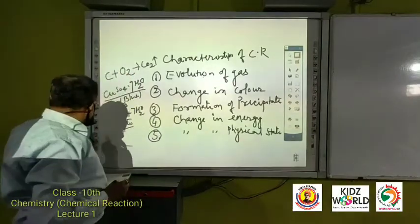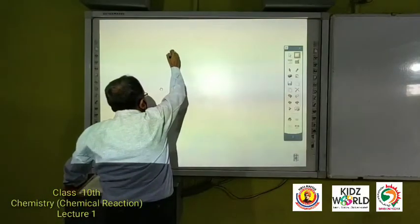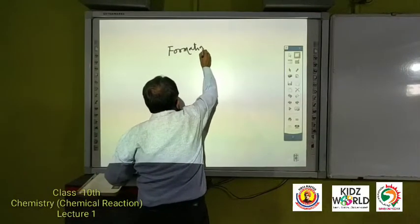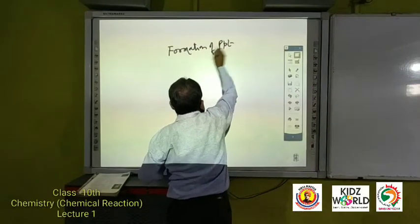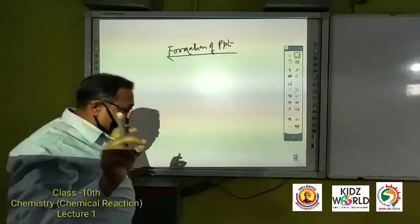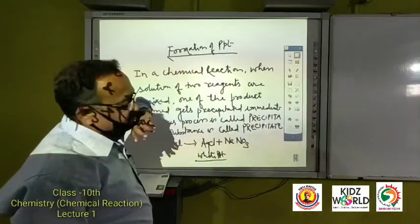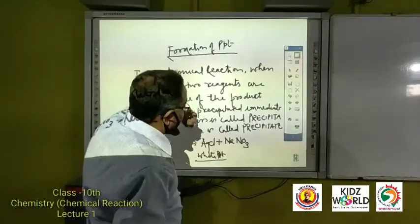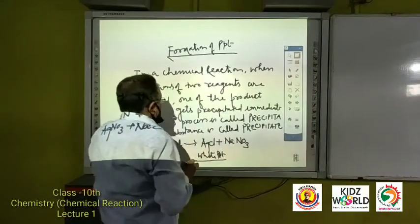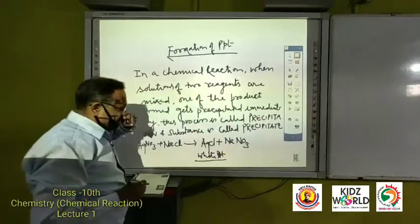Then third one is formation of precipitate. So what is precipitate? What is precipitation? In a chemical reaction when solutions of two reagents are mixed, one of the product forms gets precipitated immediately.